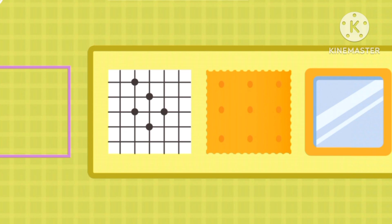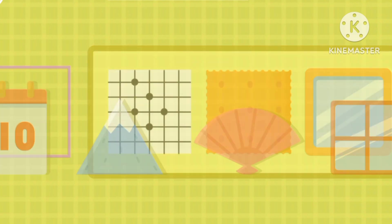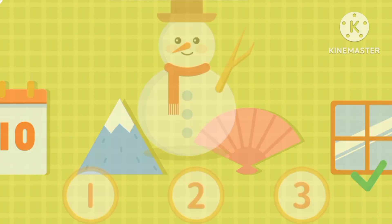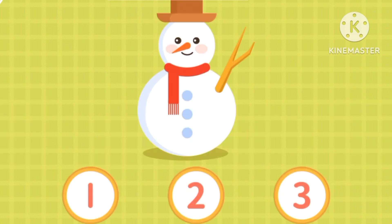This is a square. These are square shapes. Can you spot a square? The window. Now, how many squares are there?